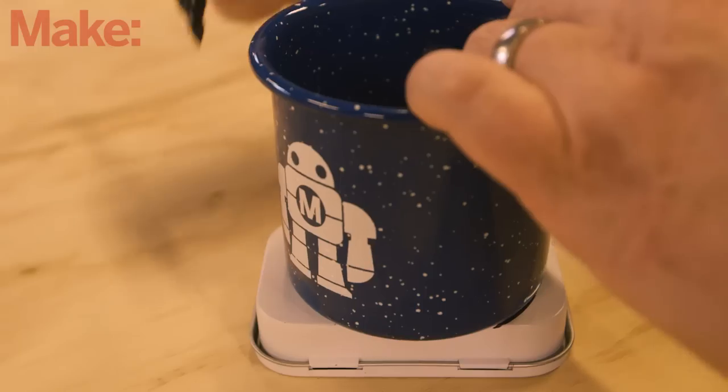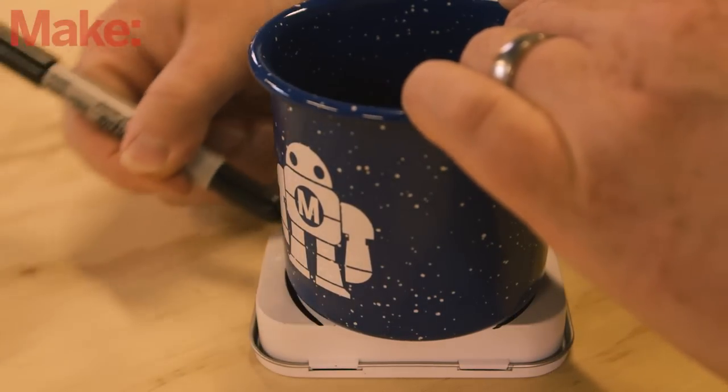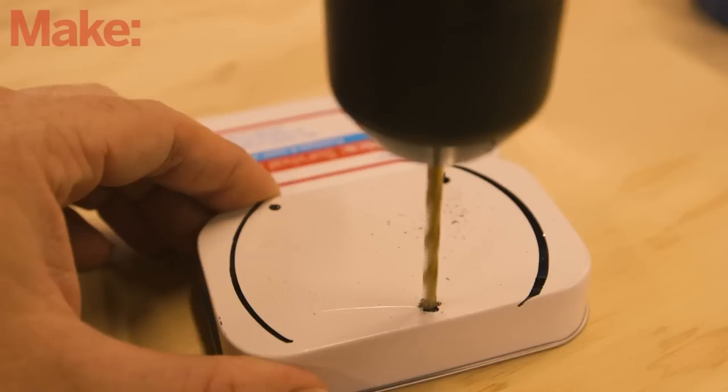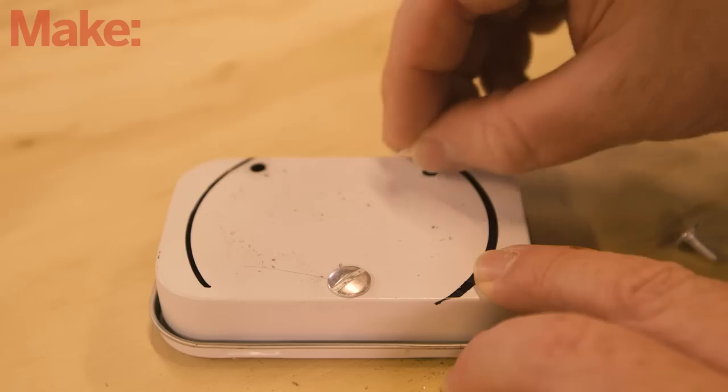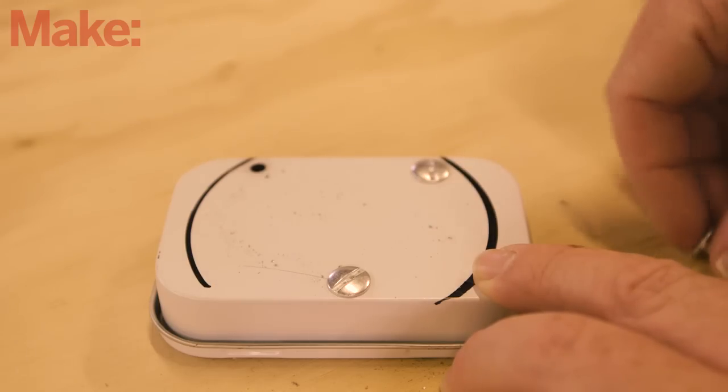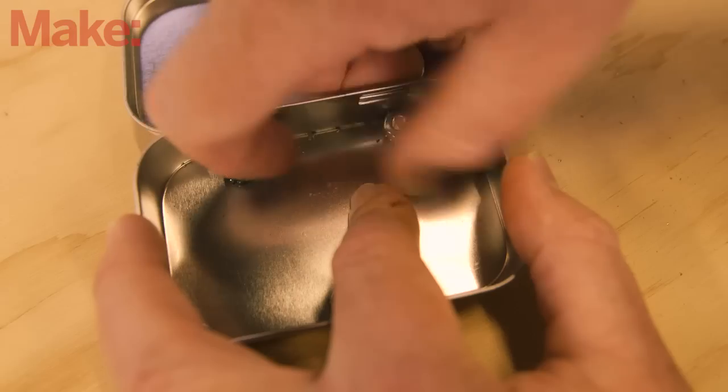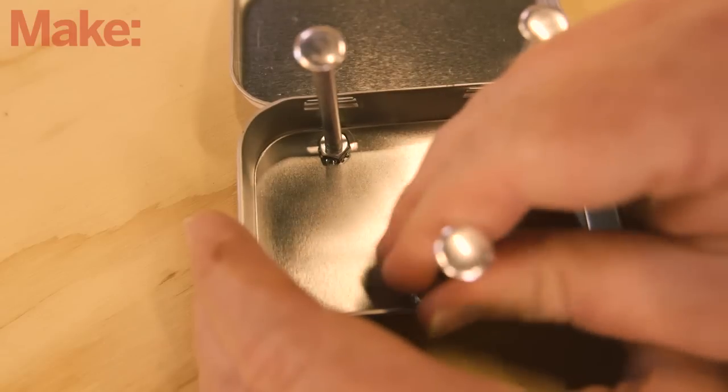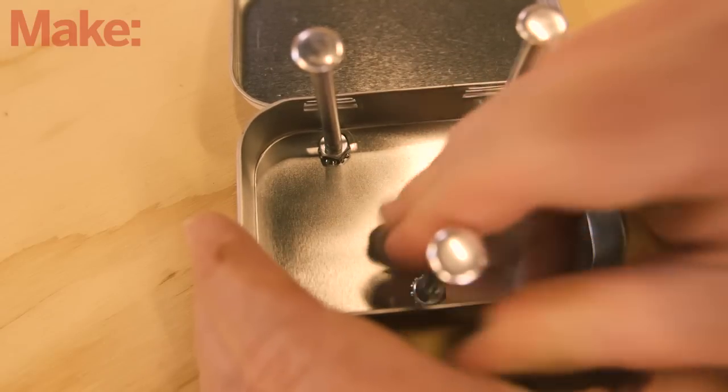We'll start by building the pot stand. Trace the bottom of your pot onto the bottom of the tin. Drill three holes as equidistant as possible within the circle. Place the three short ends of the Chicago screws through the holes and secure them in place with the nuts, but make sure there's enough thread to secure the long side of the Chicago screws.